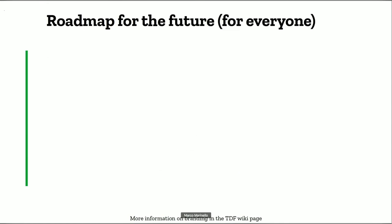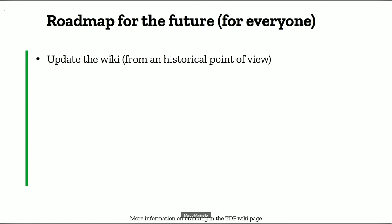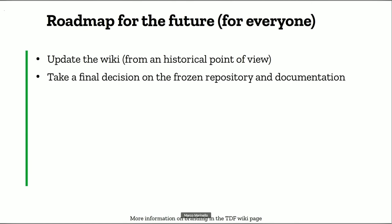Last but not least, a roadmap for the future — for everyone, for TDF, and for me. First, update the wiki from a historical point of view: the wiki is stuck with the procedure on how to build Online but says nothing about the TDF repository being frozen or the fork. Second, someone should take a final decision on the frozen repository and documentation: if Online is still a project of TDF it makes sense to maintain the repository and the wiki, but if it's not, maybe we should just drop them.